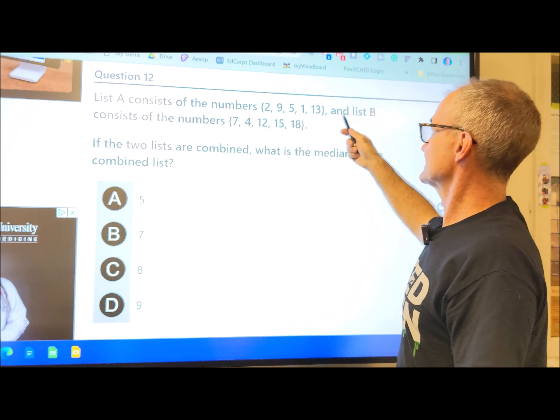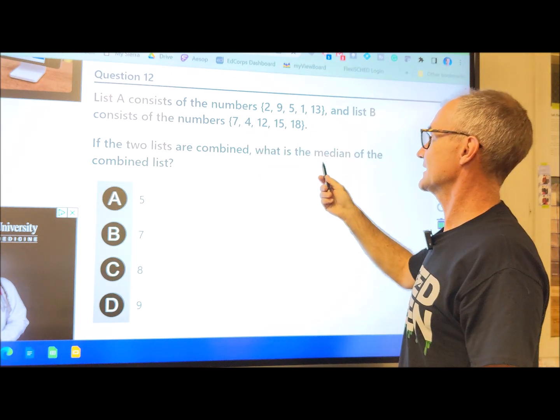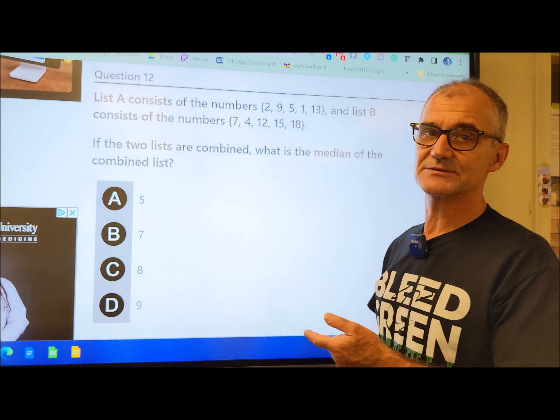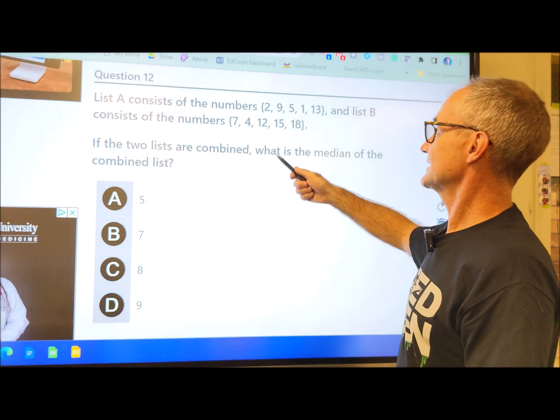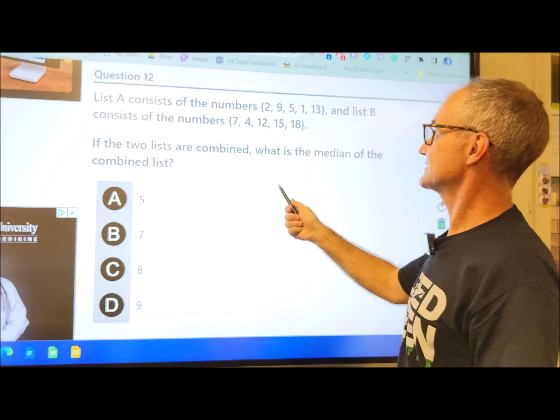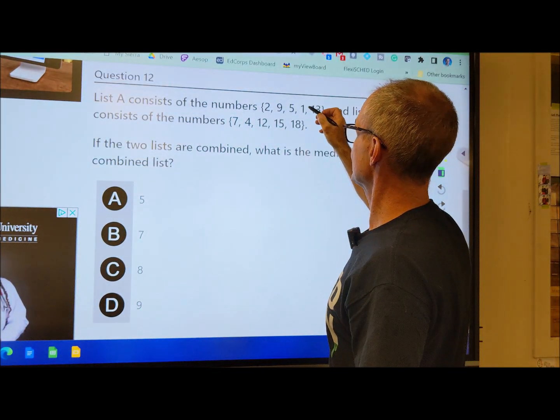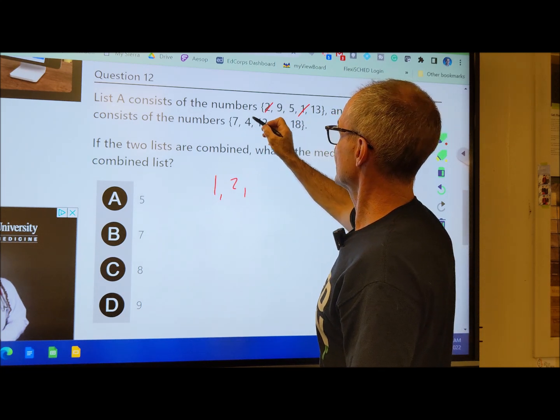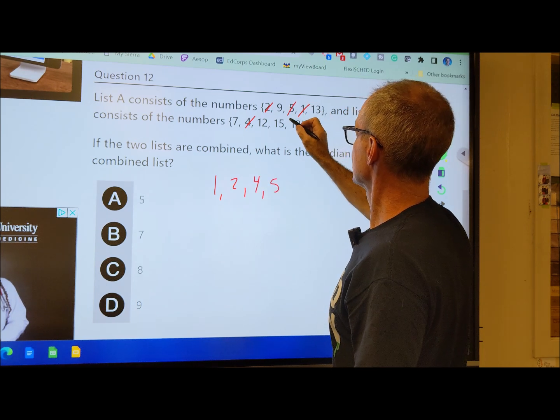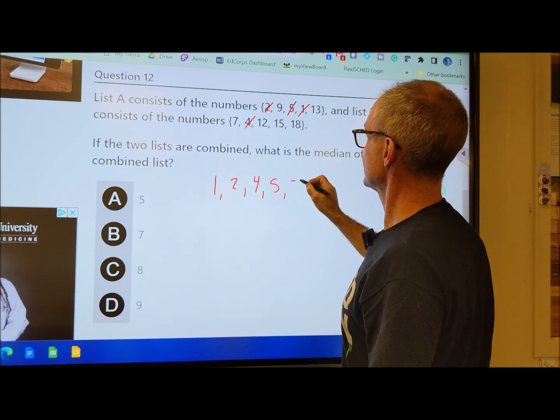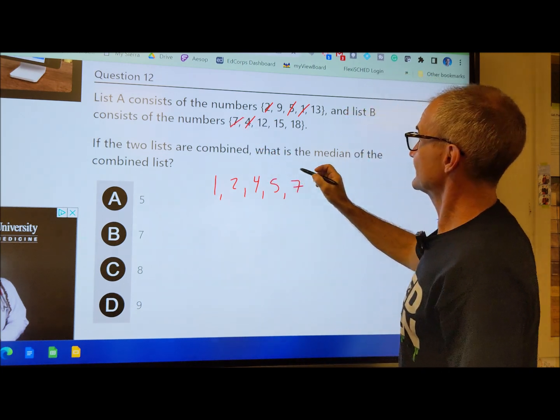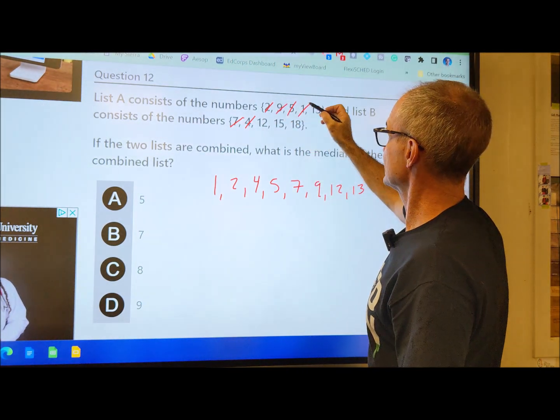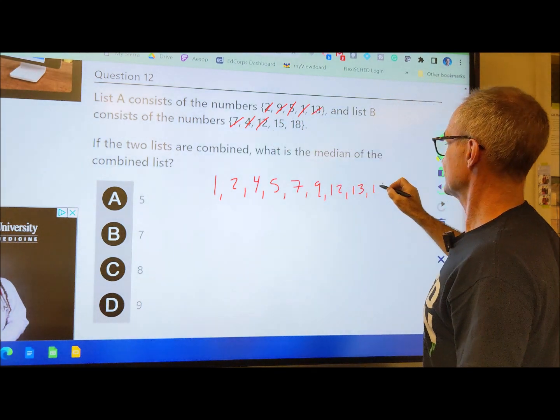List A consists of these numbers and list B consists of these numbers. If the two lists are combined, what is the median of the combined list? So the median is the middle number, the mean is the average, and the mode is the most frequent. So I'm going to put all these numbers in numeric order from least to greatest, and then I'm going to find the middle number. So the lowest number is 1, then a 2, and then a 4, then a 5, then a 6, 7. What else do we have? 9, 12, 13, 9, 12, 13, 15, and 18.